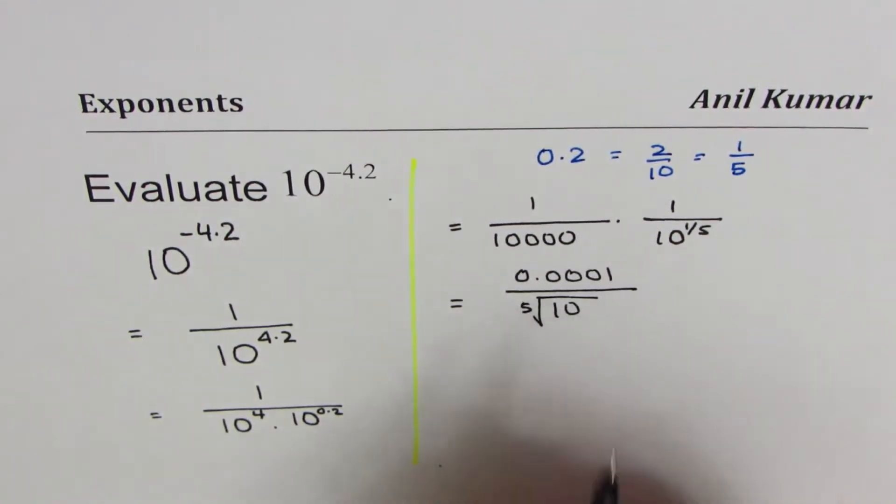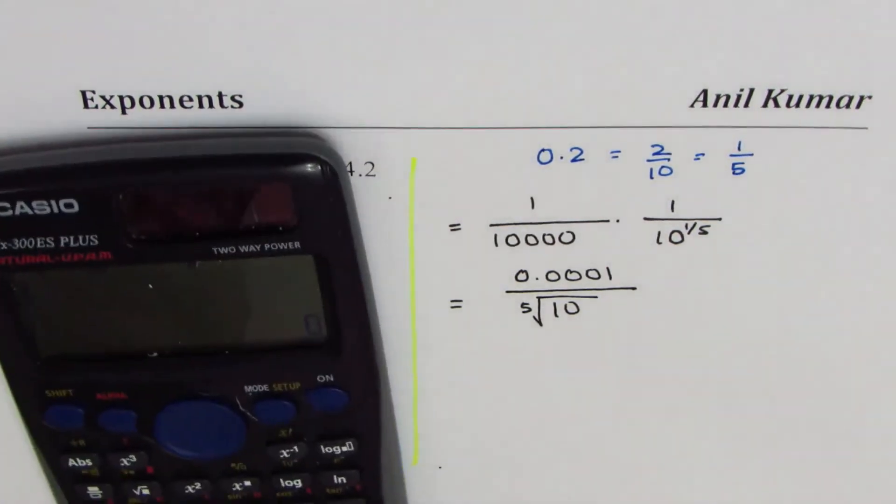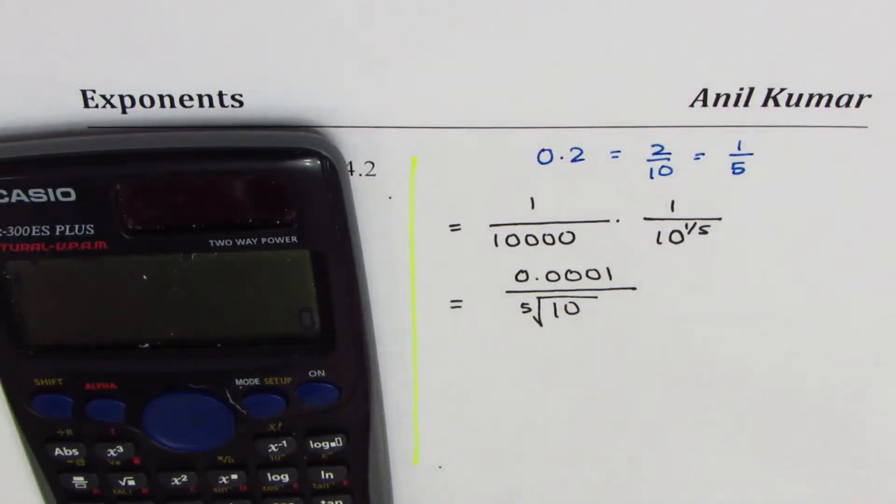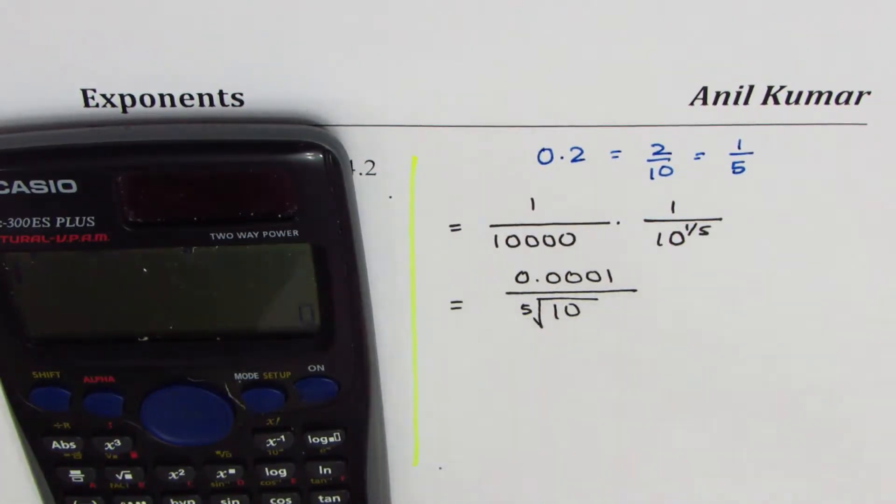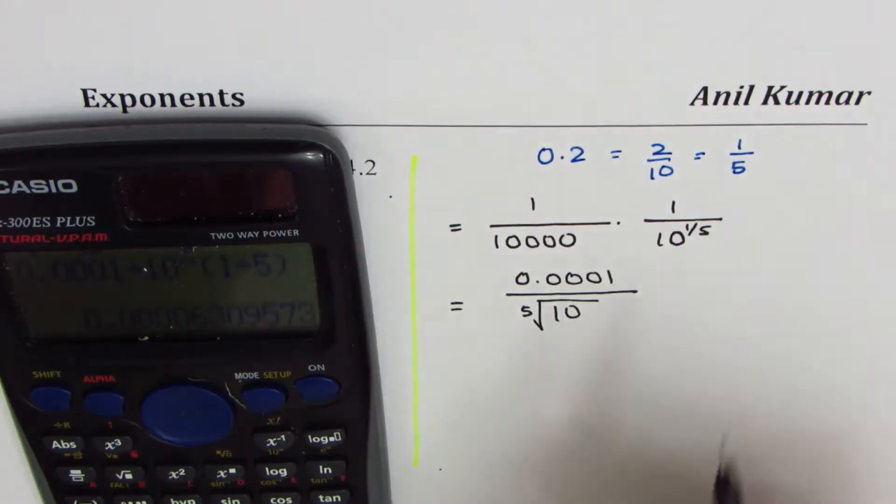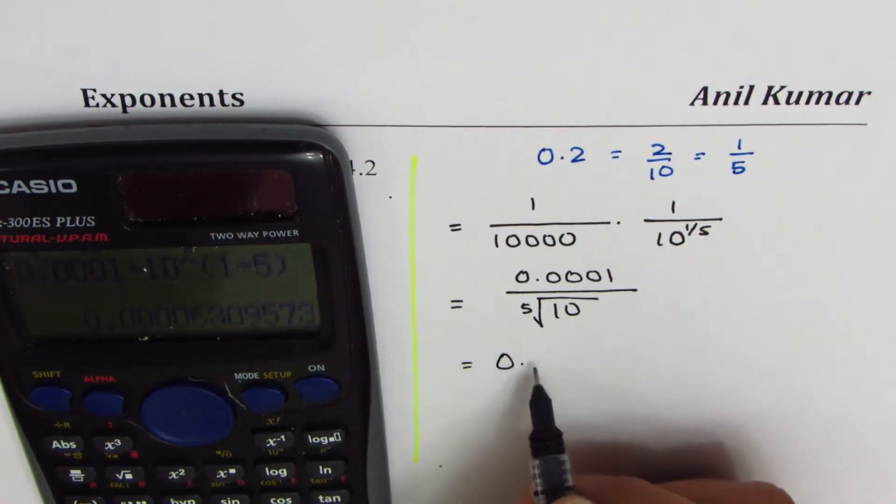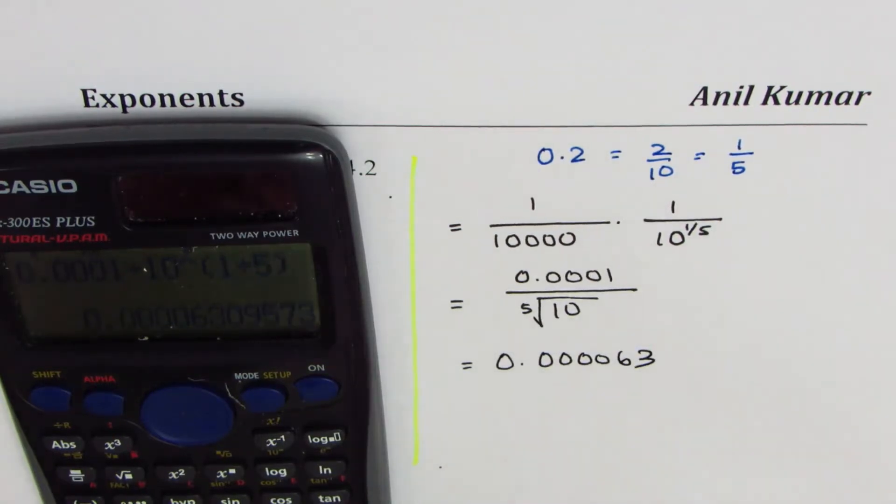That is the solution in our case. You can always use the calculator to find the answer because fifth root of 10 is very difficult. So what we have is 0.0001 divided by fifth root of 10, or 10 to the power of 1 divided by 5, which is equal to 0.000063.